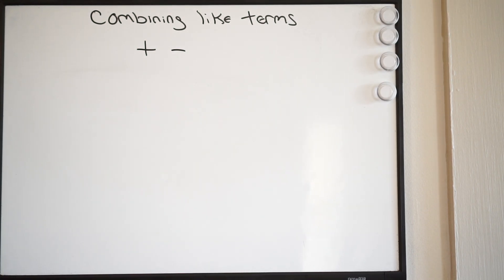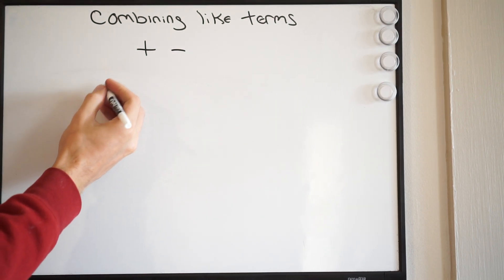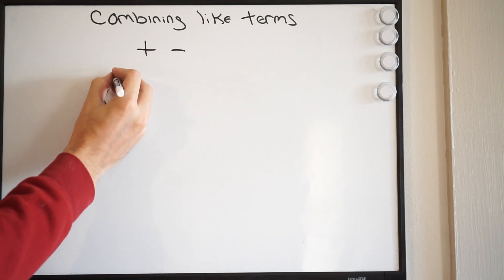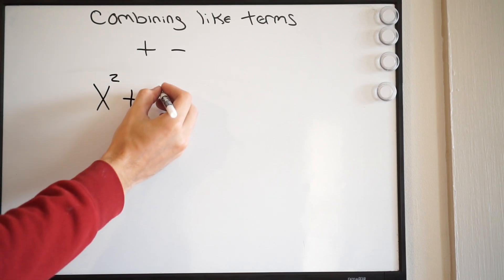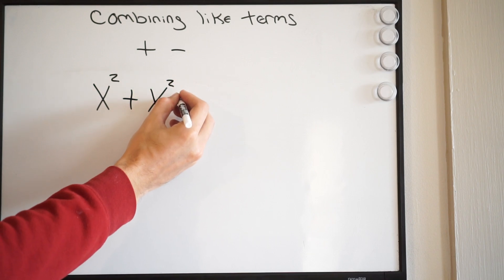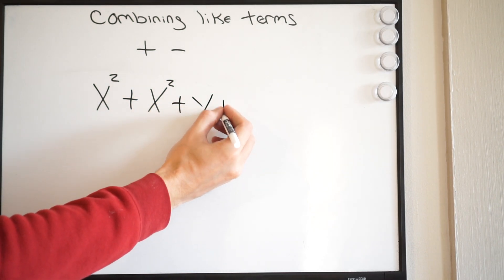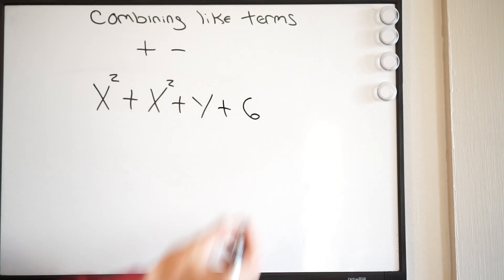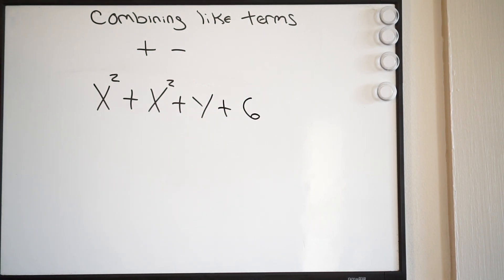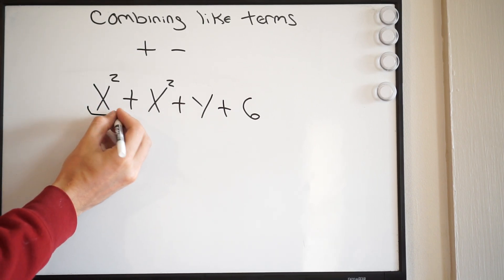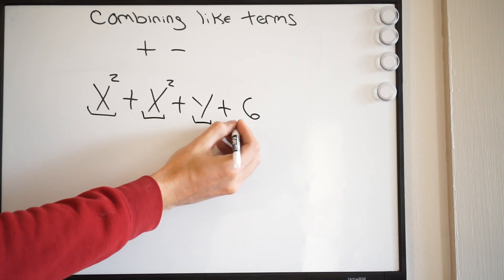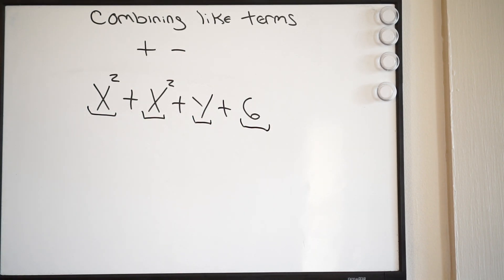Something a little more challenging. What if we have x squared plus x squared plus y plus 6? First thing, how many terms do you have? Well, addition or subtraction will act as our separator. So we have a term here, here, here, and here. So we have four terms.